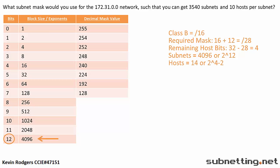The last step is to convert the shorthand mask to decimal. We will start at slash 24 and work our way up: 25, 26, 27, 28. We can see our decimal mask value is 240.